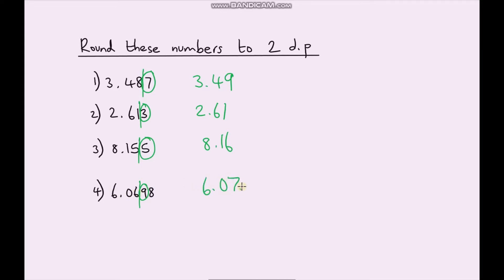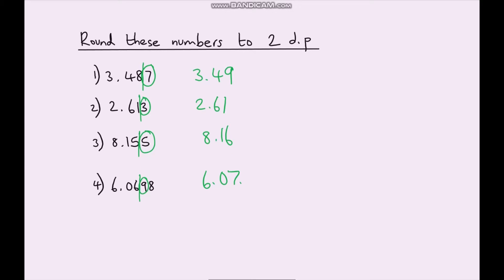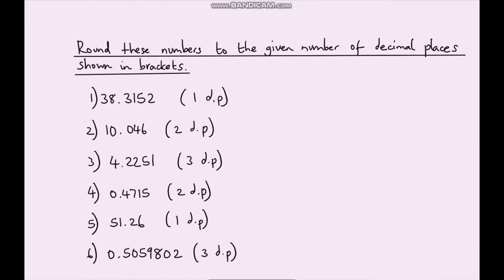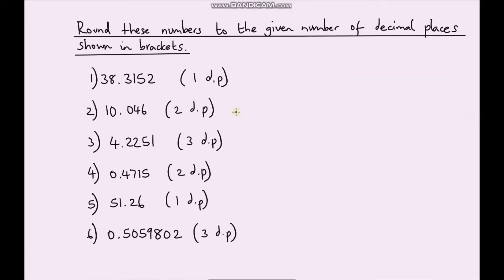Notice how the technique is exactly the same — I've just drawn the line in a different position. Now I've got some problems for you to have a go at yourself, including some that involve three decimal places, but it's exactly the same technique. Pause the video and round these numbers to the given number of decimal places shown in the brackets. This number rounds to one decimal place, this one to two decimal places, and so on.